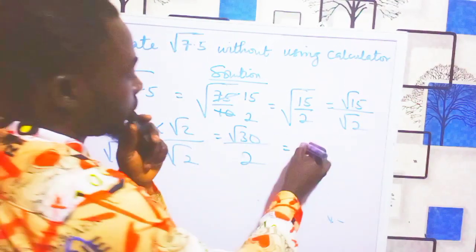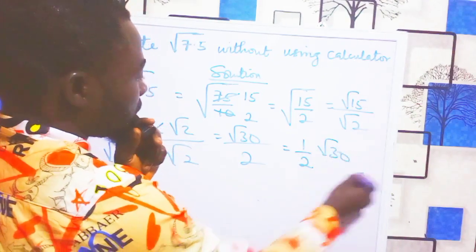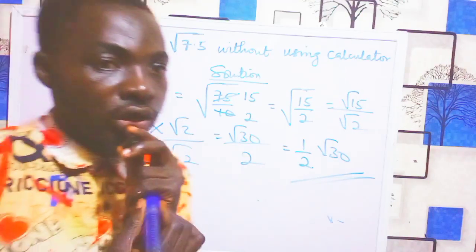So now we have root 30 over 2, and that is the answer to this surd expression.